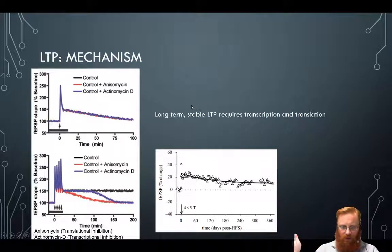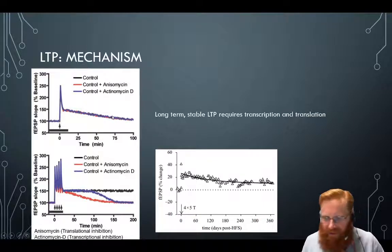And then finally, we know that long-term stable LTP requires transcription and translation. So here is a weaker LTP. They stimulate the field EPSP slope, the size of the field EPSP gets bigger, and then slowly, over the course of an hour, slowly heads back to baseline.